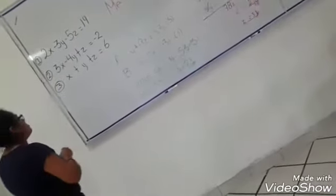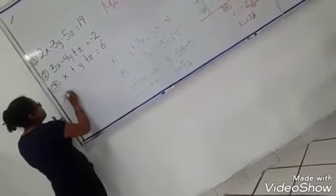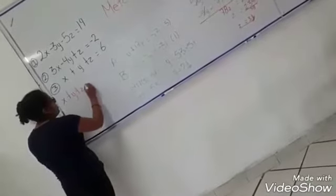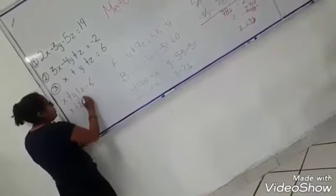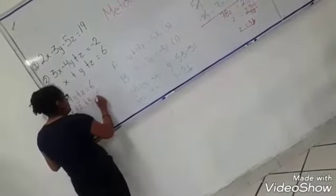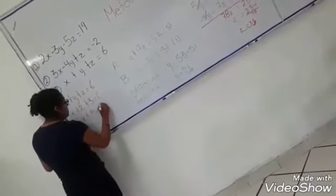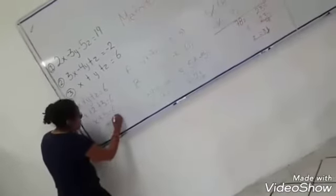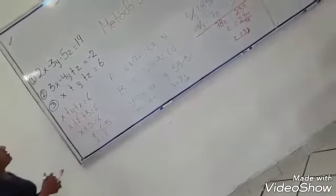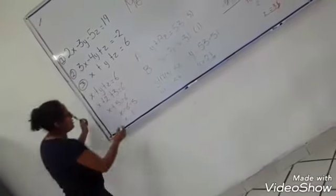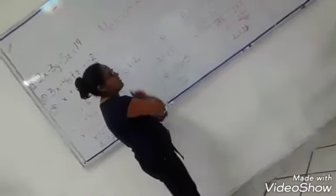Para encontrar el valor de X podemos sustituir en la ecuación X más Y más Z igual a 6. X más 3 más 2 es igual a 6. X más 5 igual a 6. X es igual a 6 menos 5. X es igual a 1. Y estos son los valores de las incógnitas: el valor de X que es 1, el valor de Y que es 2, y el valor de Z que es 3.